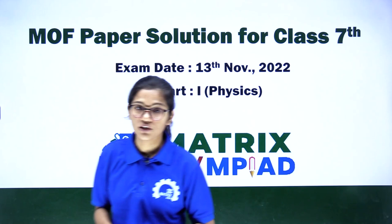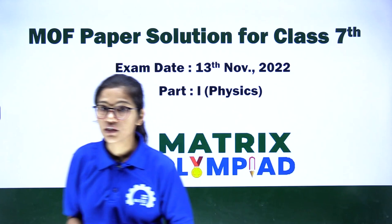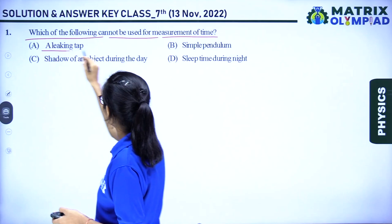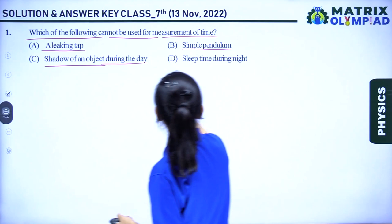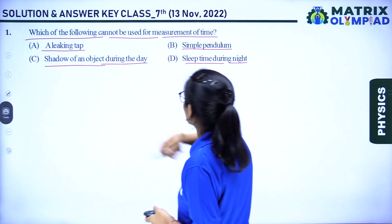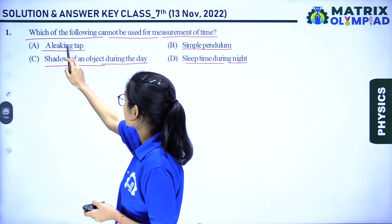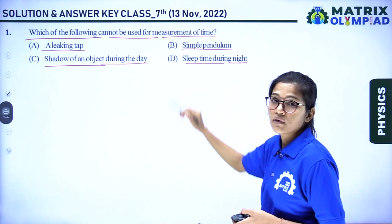Question number 1: which of the following cannot be used for measurement of time? The options are a leaking tap, a simple pendulum, the setting of an object during the day, and sleep time during the night. A simple pendulum can be used for time measurement, setting of an object during the day is used similarly, and a leaking tap can also be used. But sleep time during the night cannot be used because it varies. So the answer to question 1 is option D.